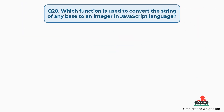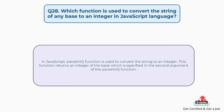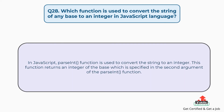Question number twenty-eight: which function is used to convert a string of any base to an integer in JavaScript? In JavaScript, the parseInt function is used to convert the string to an integer. This function returns an integer of the base which is specified in the second argument of the parseInt function.